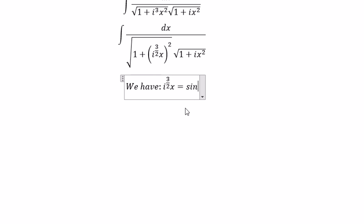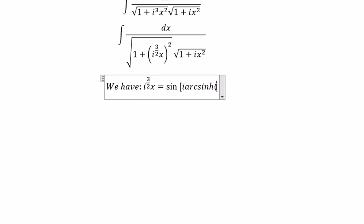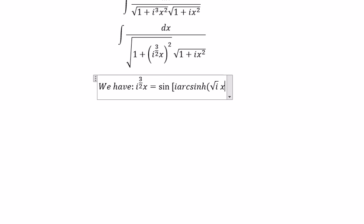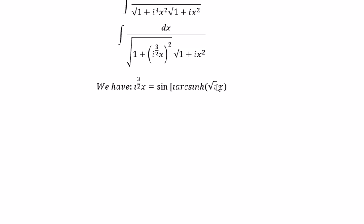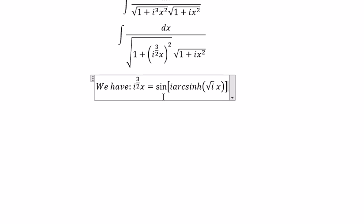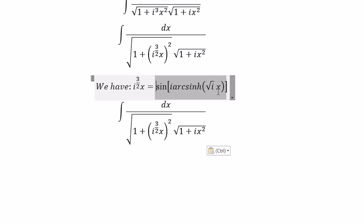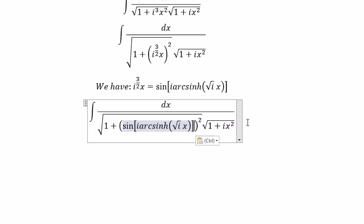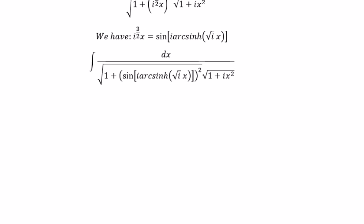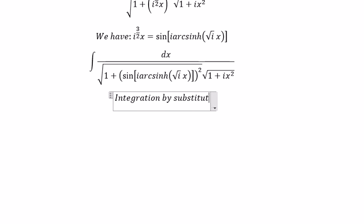This equals — opening the brackets — i multiplied with the square root of i, multiplied with s. So we are going to transform this expression into this form. We put this in here, and now we can use integration by substitution.